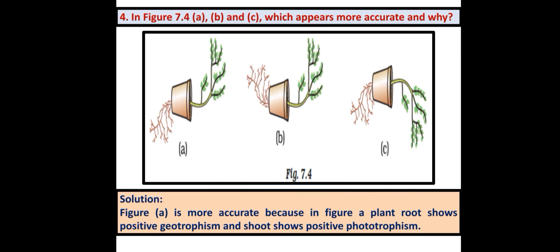In figure A, the plant root shows positive geotropism — that is, growth towards gravity. The shoot shows positive phototropism — that is, growth towards light. In figures B and C, this is not shown properly. So A is the correct answer.